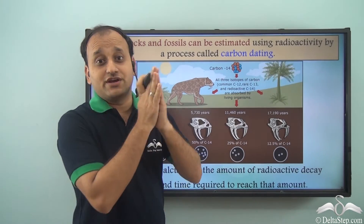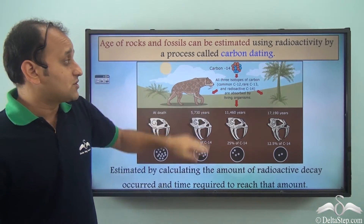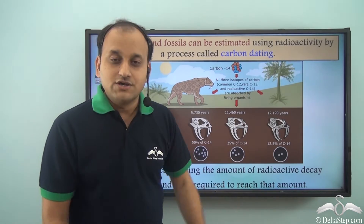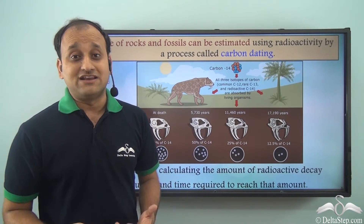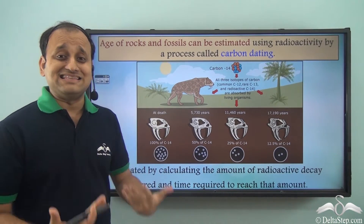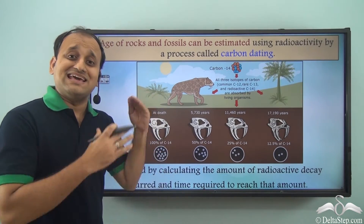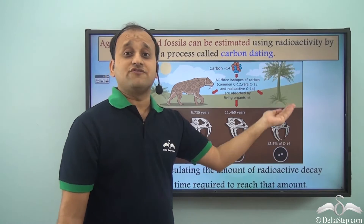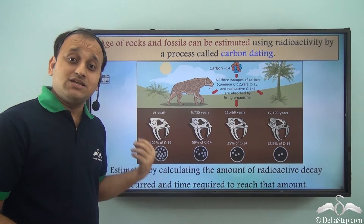Another important application of radioactivity is estimating the age of rocks and fossils using a process called carbon dating. Every living organism absorbs carbon-14, a radioactive isotope of carbon, during its lifetime. The amount of carbon-14 in a living organism is approximately fixed, so we know how much was present at the time of death. When we find a fossil, we calculate how much carbon-14 remains.